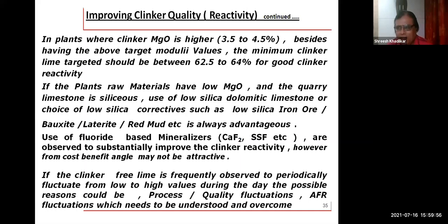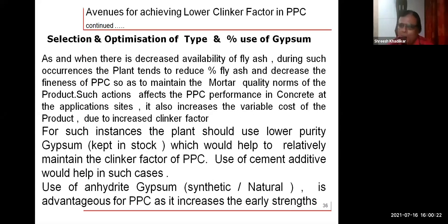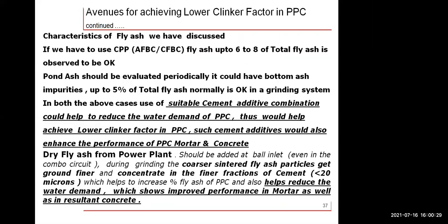Gypsum selection also matters: when fly ash sourcing reduces due to power plant shutdowns, plants often decrease fly ash content or coarsen PPC — actually deteriorating PPC performance. Instead, using a stock of low-purity gypsum to compensate for fly ash shortage can maintain clinker factor. Cement additives could also be an option.